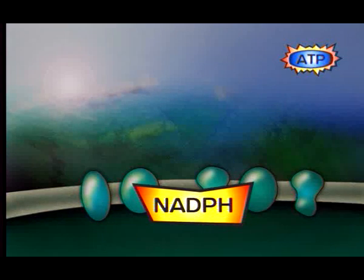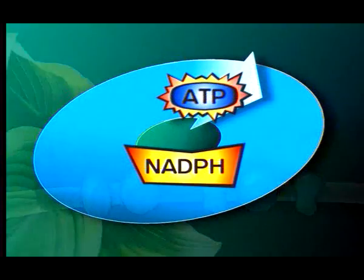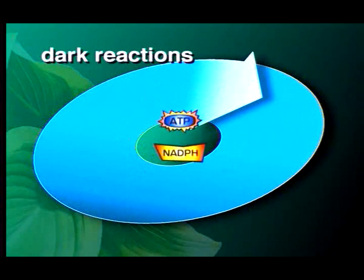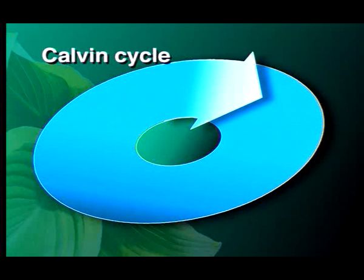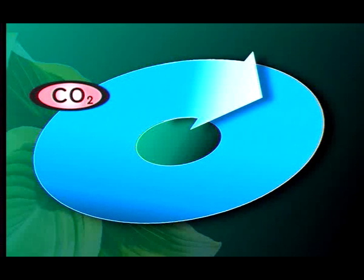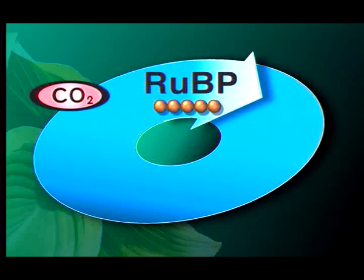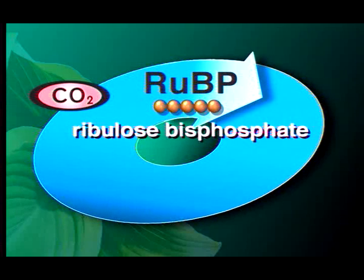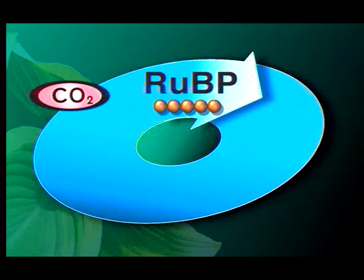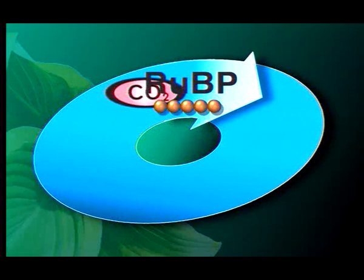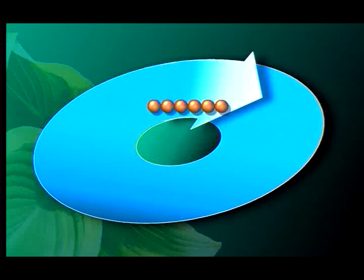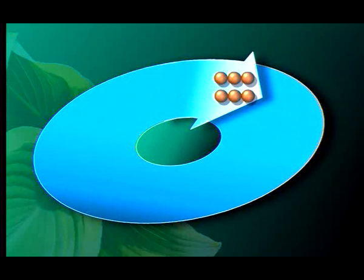Together, the ATP and NADPH produced in the light reactions provide the energy for the dark, or light-independent, reactions. The dark reactions involve a series of chemical reactions called the Calvin cycle. Carbon dioxide from the atmosphere enters the Calvin cycle and reacts with a compound called ribulose bisphosphate, or RuBP. RuBP contains five carbon atoms. The addition of a carbon molecule from carbon dioxide creates an unstable six-carbon molecule, which splits in two, forming two three-carbon molecules.